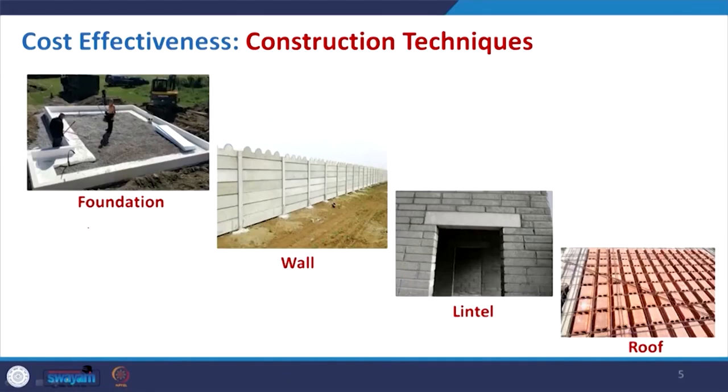Coming to the cost effectiveness of a very simple building — this topic is very interesting and can be delivered through a number of lectures as a self-sufficient subject for architecture or civil engineering students. But in this presentation I will focus on a small scale building, not a skyscraper. In the construction technique, as you can see in this slide, we can divide the structure into four components: foundation, wall, lintel, and roof — and also the plinth and other components — but these are the major components to explore.